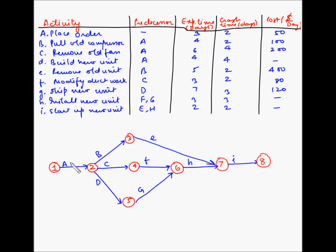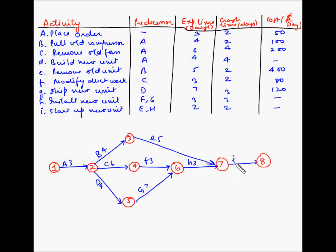Now let me put the expected time for each of the activities. A is 3, B is 4, C is 6, D is 4, E is 5, F is 3, G is 7, H is 3, and I is 2.